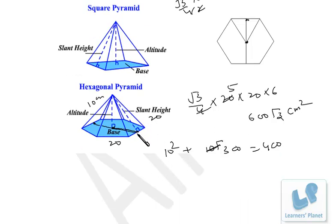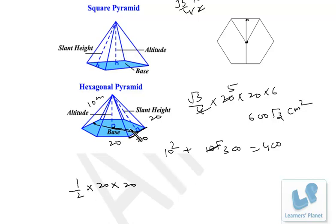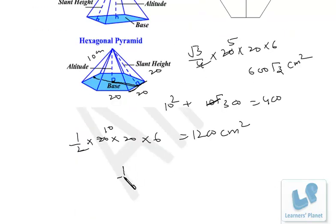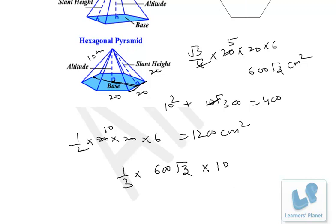The slant height of 20 is the height of each lateral triangle. Area of one lateral triangle = (1/2) × base × altitude = (1/2) × 20 × 20 = 200. There are 6 such triangles on the hexagonal base, so curved surface area = 6 × 200 = 1200 cm². For volume: 1/3 × base area × height = 1/3 × 600√3 × 10, which can be calculated easily.